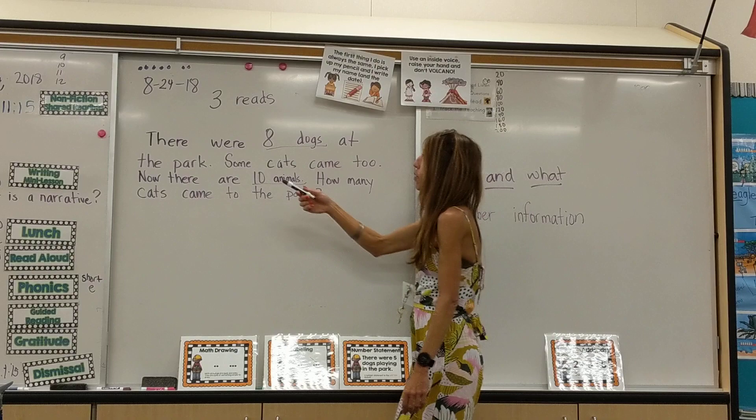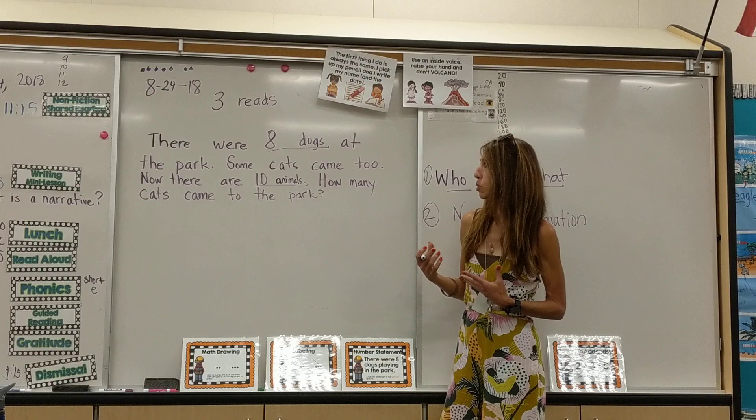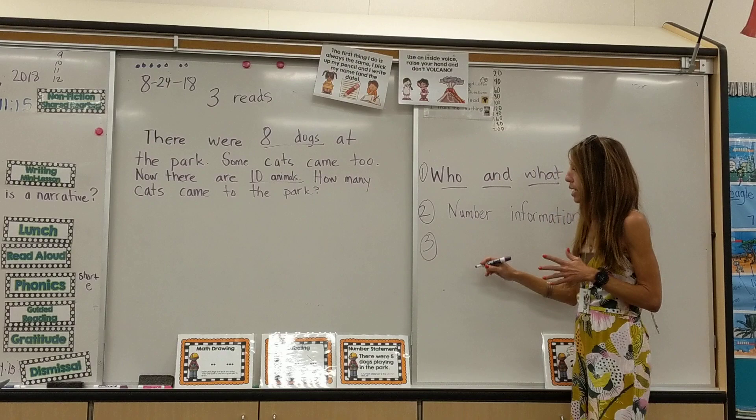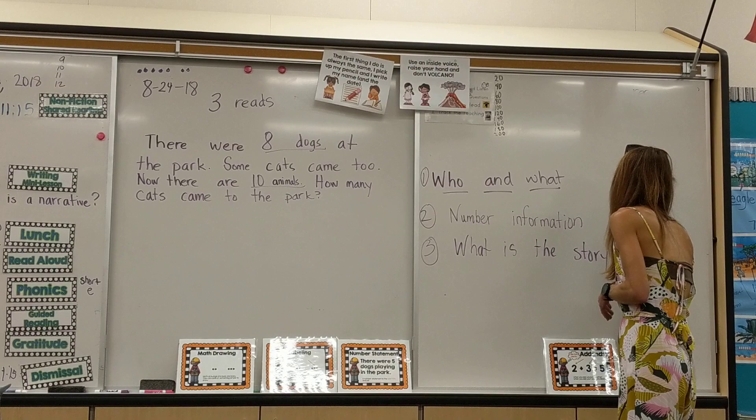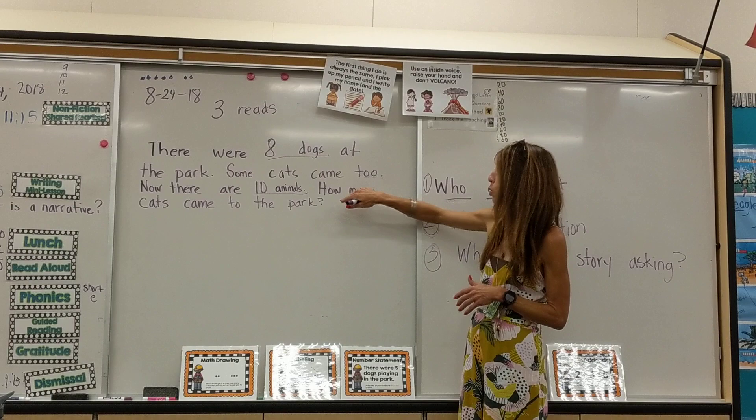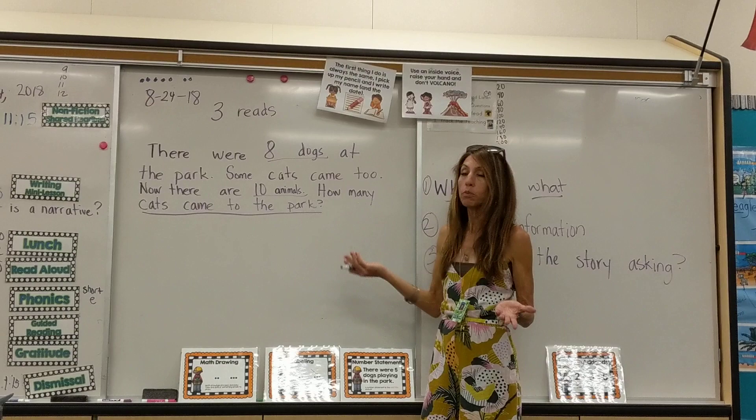Then we read it a third time: 'There were eight dogs at the park. Some cats came too. Now there are ten animals. How many cats came to the park?' The third read is asking: what is the story asking? Hopefully they'll tune in to the final question — the story is asking how many cats came to the park.